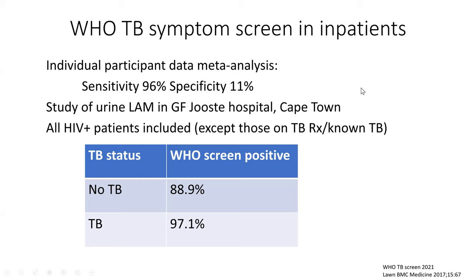Let's look at how we screen for TB in outpatients. In 2011 the WHO came out with a four-symptom screen: current cough of any duration, fever, night sweats, and weight loss. Any one of those four flags someone as a TB suspect and you should work them up for TB. But when they devised it, they didn't really think beyond outpatients, and assumed it would apply equally to all types of TB — which it turns out it doesn't.